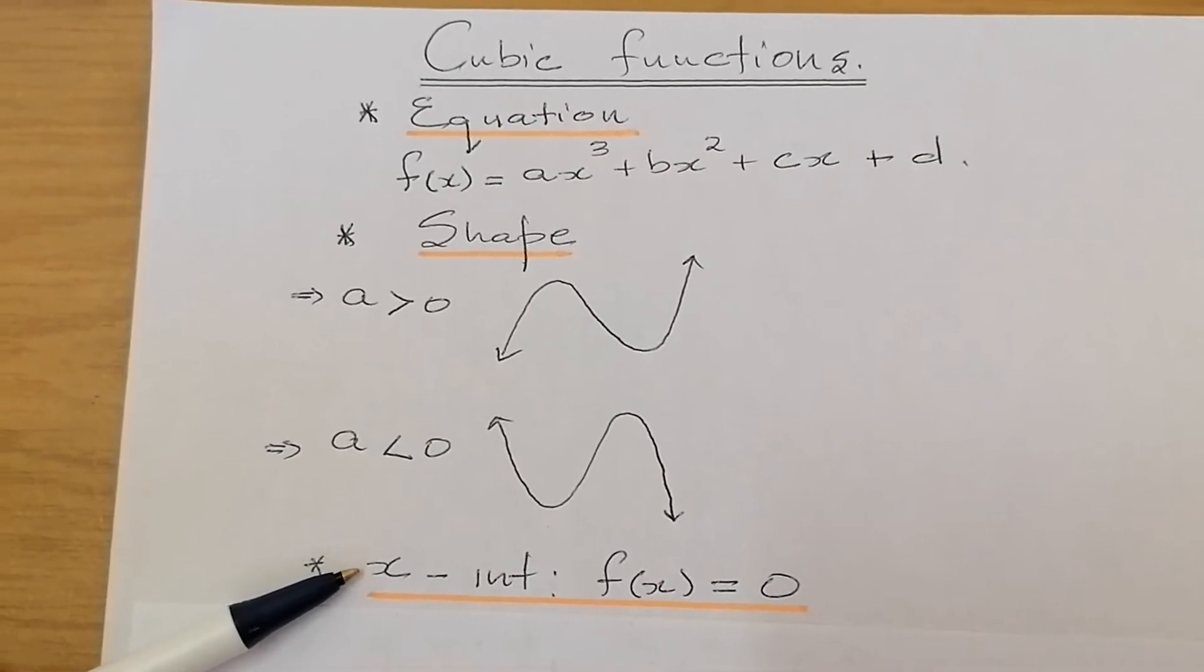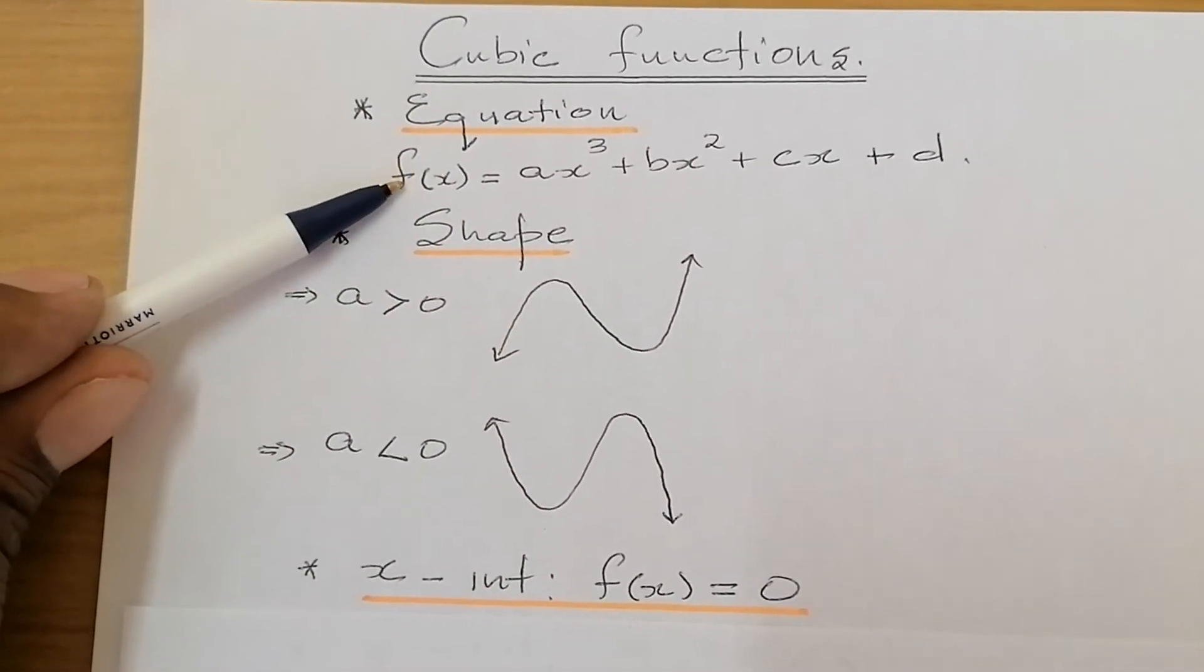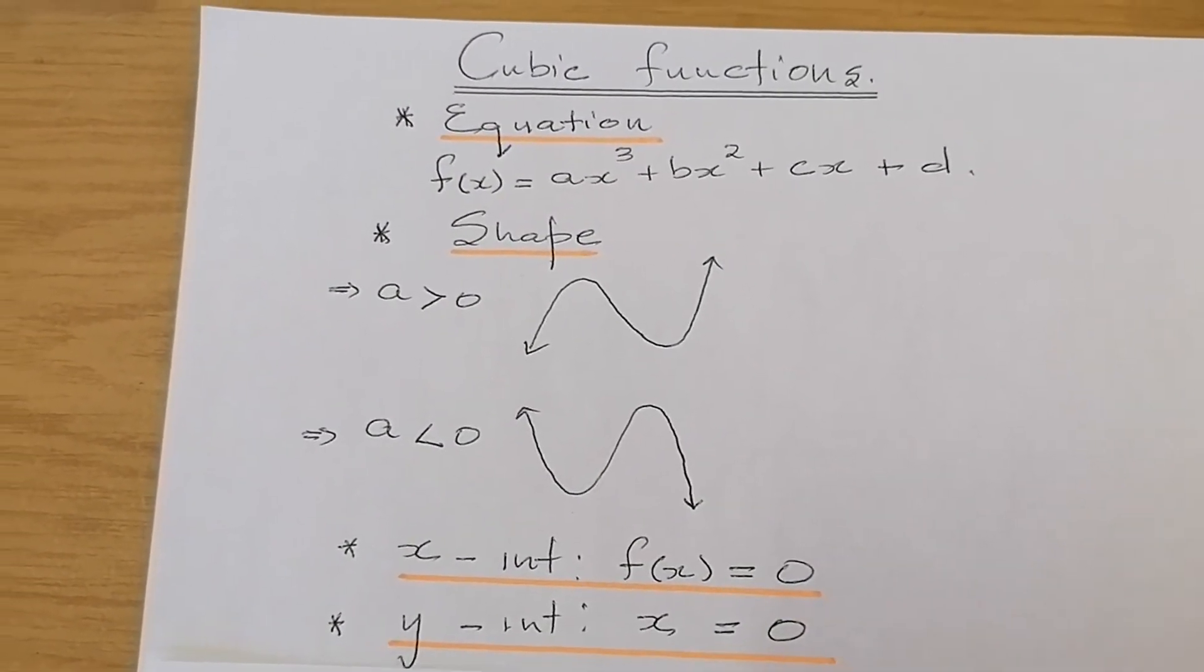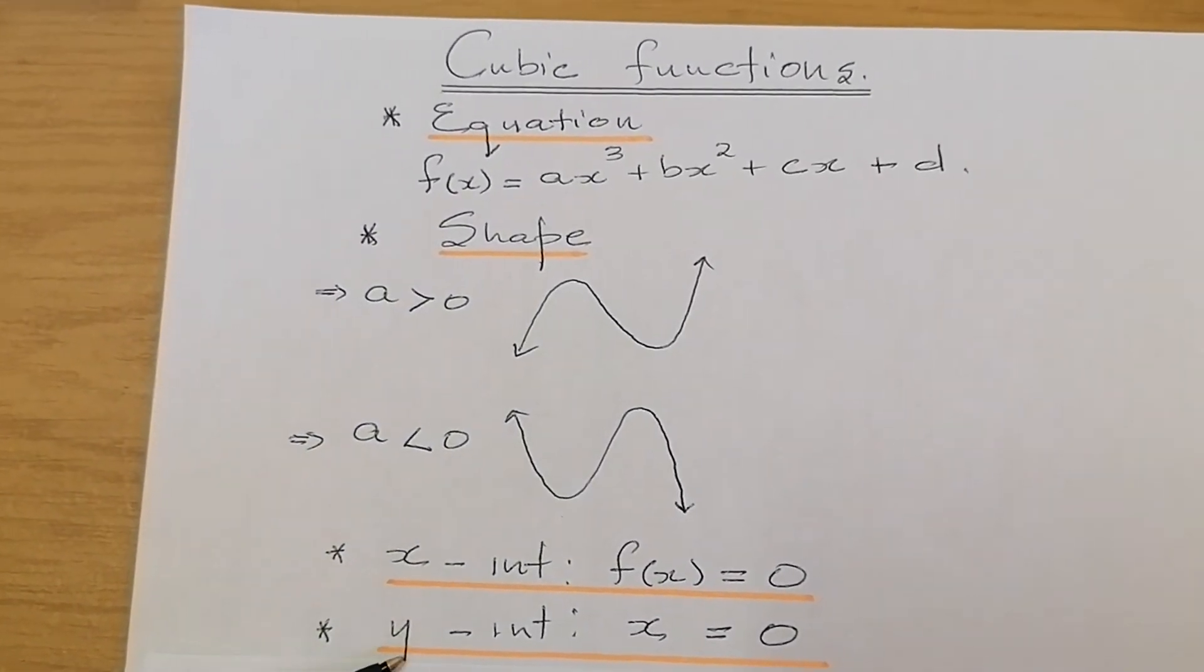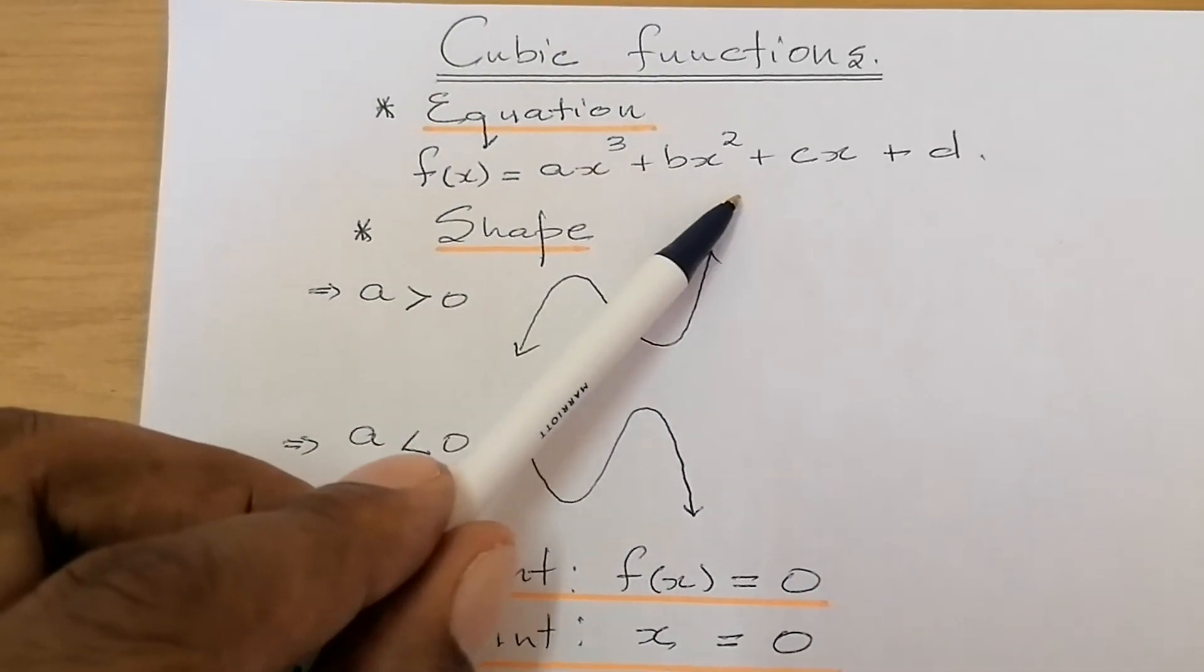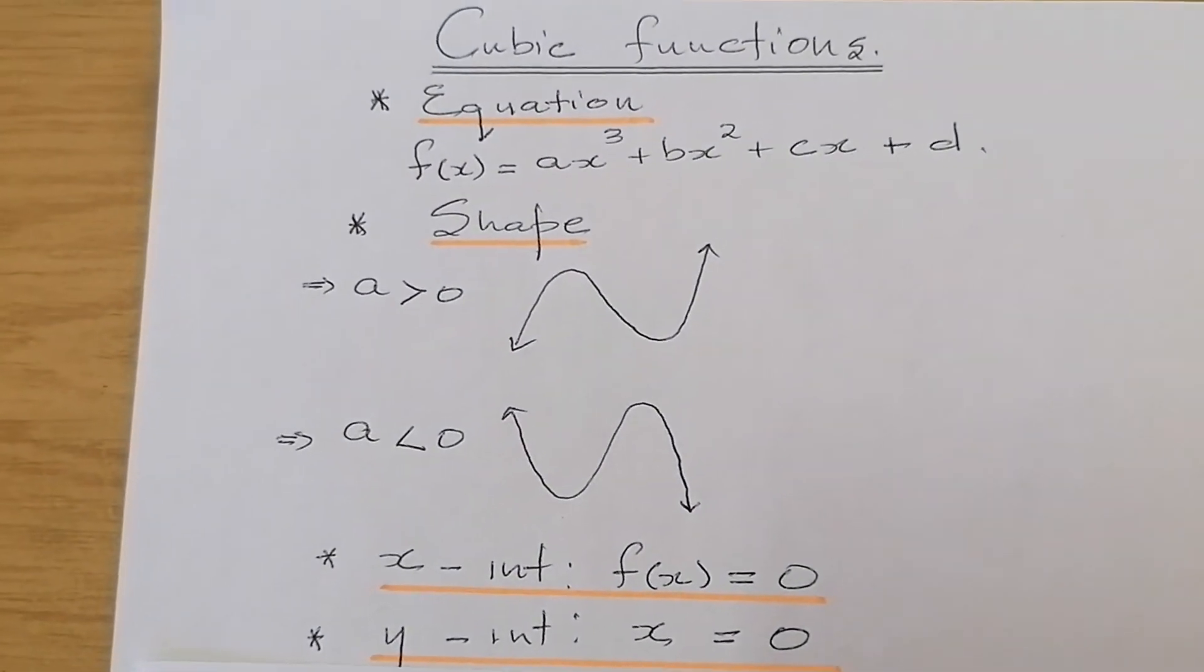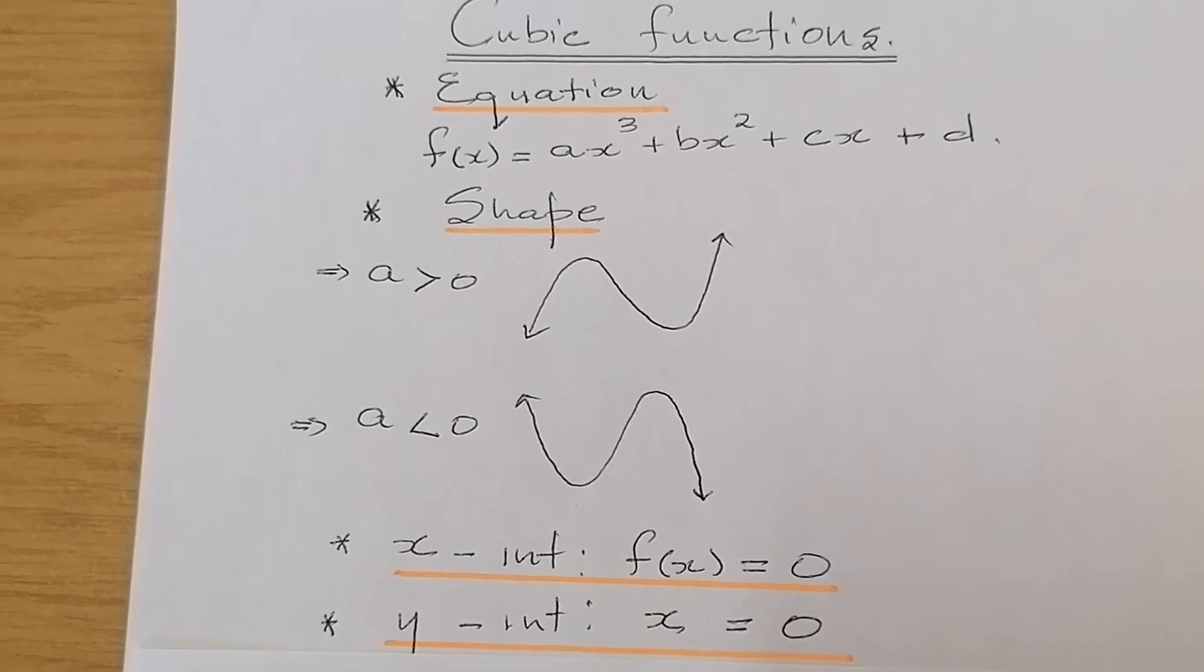Now, we know where the graph is going to cut the x-axis. We now need to know where is this graph going to cut the y-axis. That is what we refer to as y-intercept. Now, for y-intercept, the value of x must be equal to zero, meaning that all those x will be substituted by a zero. Then we get the y-intercept.